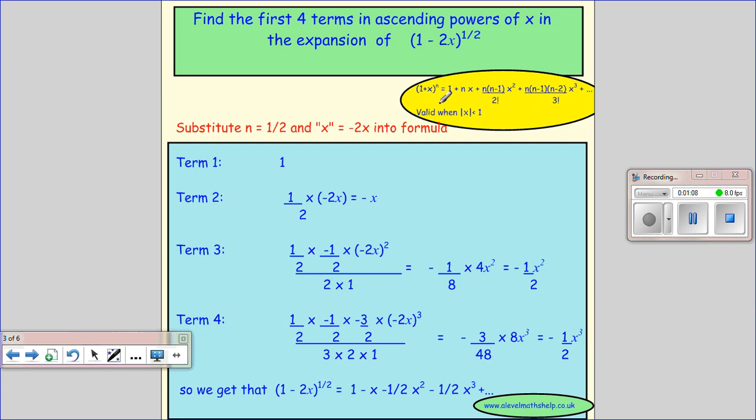So doing each term by term, first term is 1, second term is n times x, so a half times minus 2x.